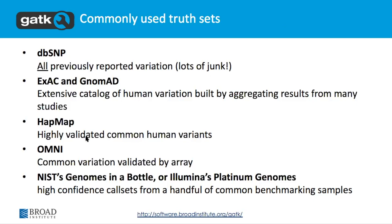There are some common public truth sets out there. dbSNP covers all previously reported variation — there's a lot of junk in here, it's used more as a sanity check than anything. There's the Exome Aggregation Consortium (ExAC) and the Genome Aggregation Database (gnomAD) — a catalog of all human variation with exomes, and gnomAD adds genome information on top. HapMap, Omni, and Genomes in a Bottle are also public. HapMap covers a relatively global population for whole genome sequencing. Genomes in a Bottle is generally used for developers verifying and validating their methods.